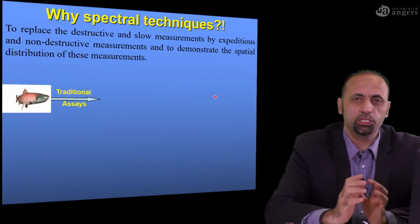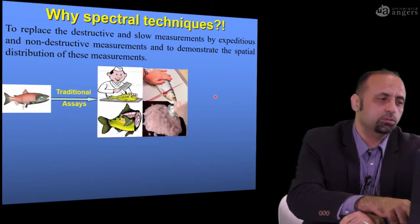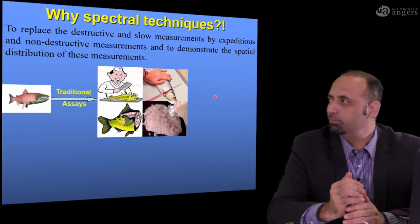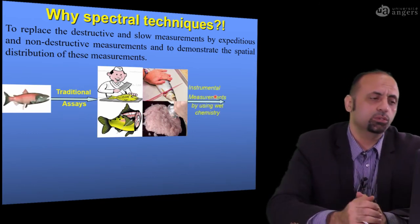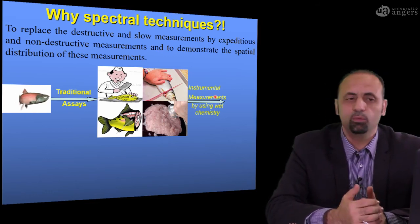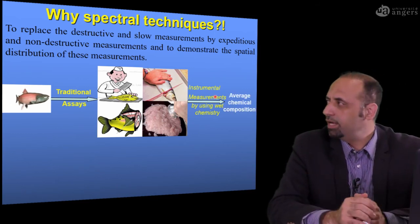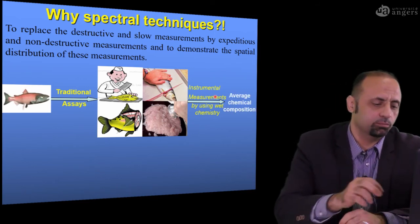If you need to get information about the overall quality of this fish, you need to take this fish to the lab to cut, to mince, and then go to your ordinary instrumental measurement using wet chemistry method to have overall one value of average chemical composition.